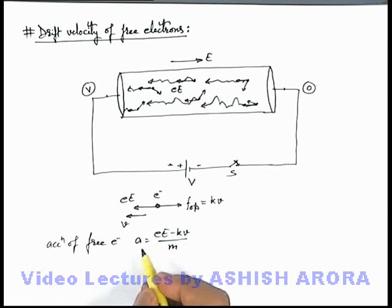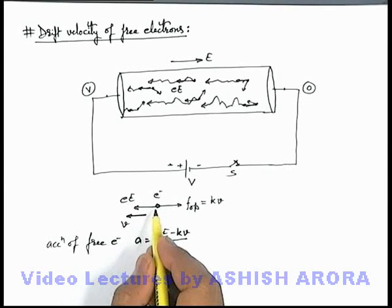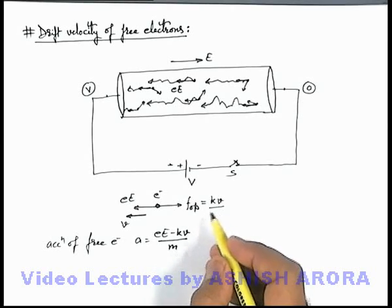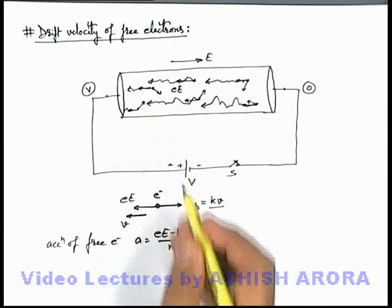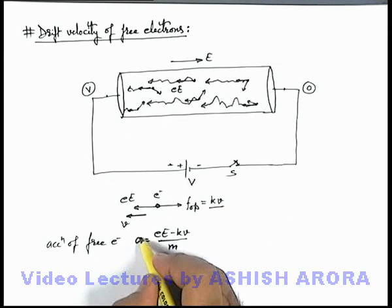And here you can say due to acceleration the speed of electrons will increase, and as electron speed increases this opposing force increases because the rate of collision increases with the speed of electrons.